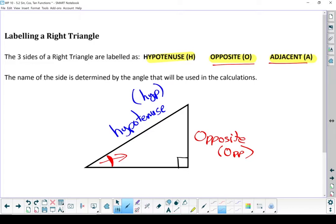And adjacent, well adjacent is a fancy word for beside. So the side that is beside the angle you're looking from, that's your adjacent side. So if I'm looking from this angle on the left, this must be my adjacent side.